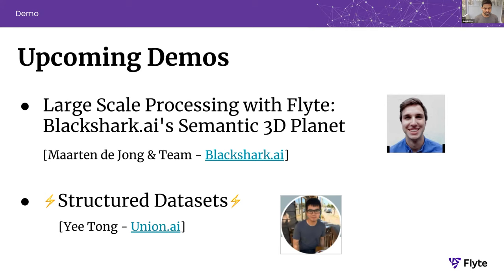There is also some work happening around visualization of custom metrics within the UI per task. If you're interested, definitely DM me — we would love to get some feedback. Think about this: you can plot your accuracy, or plot specific things if you are doing something like building a 3D planet and want to plot like number of buildings or some other metrics. We would love to support that and are thinking of it as a general framework.